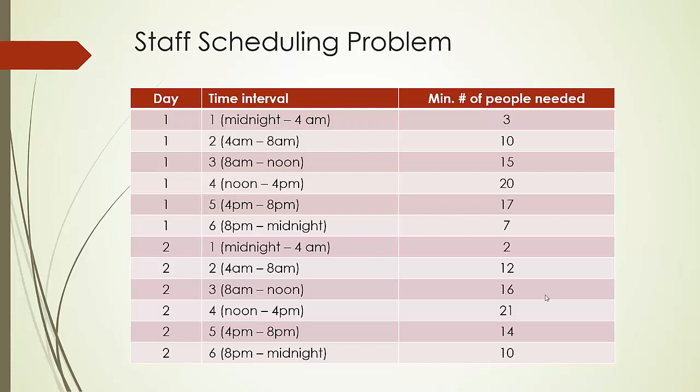Now, let's consider how we are going to approach this problem. Let's look at the very first time interval, for example, day 1 time interval 1. We need at least 3 people on duty. Think about it. Of all those people on duty on day 1 in time interval 1, there are 3 possible sources.